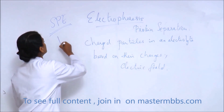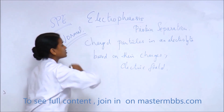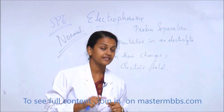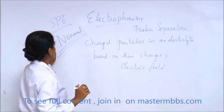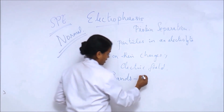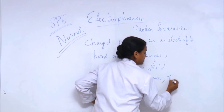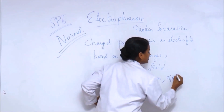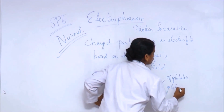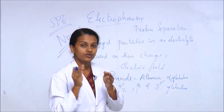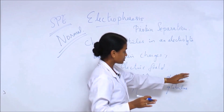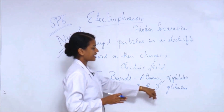The normal serum protein electrophoretic pattern is very important - you need to learn both normal and abnormal patterns for theory and practical spotters. Normal serum protein electrophoresis gives five major bands: albumin, followed by globulins divided into alpha 1, alpha 2, beta, and gamma globulins.